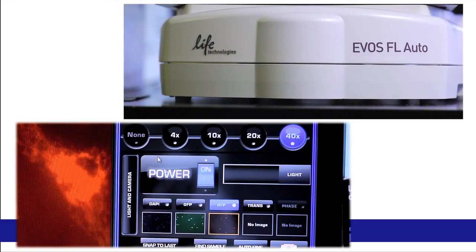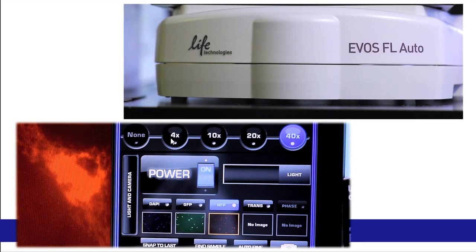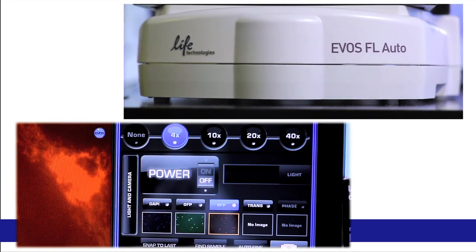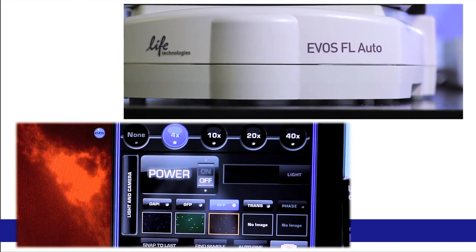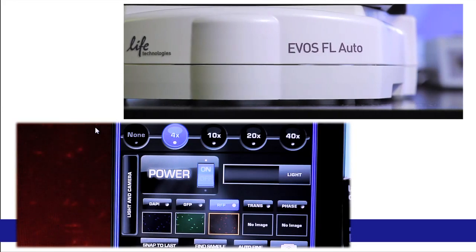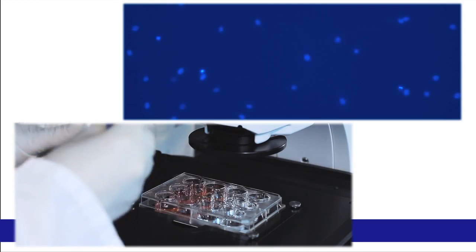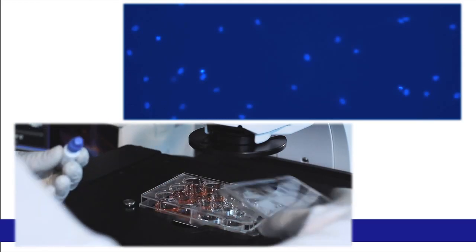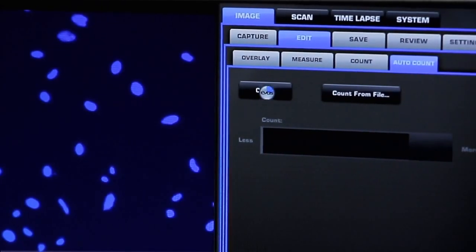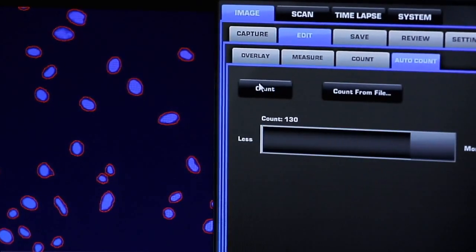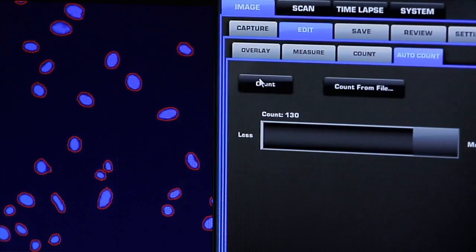The EVOS FL Auto cell imaging system contains advanced software algorithms that allow extremely accurate cell counting from a particular field of view. Following label of nuclei using a fluorescent dye like Nuke Blue Live Stain, the EVOS FL Auto will calculate the number of cells in a field of view even with a 4x objective, making it great for determining the number of cells in a well or dish.